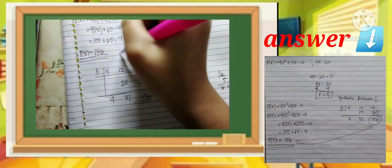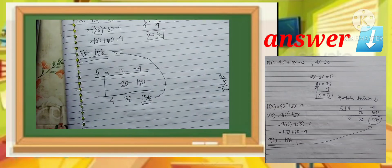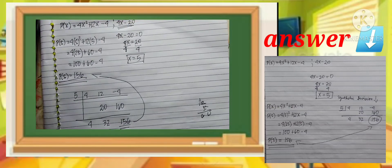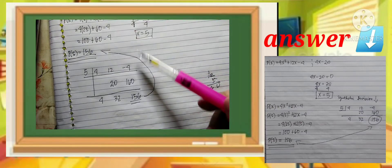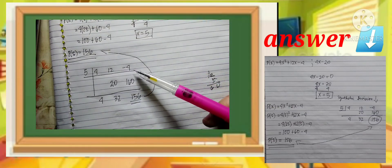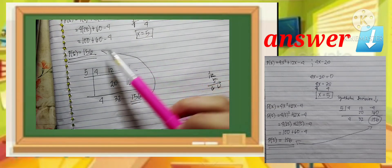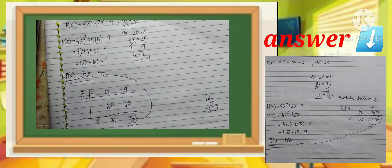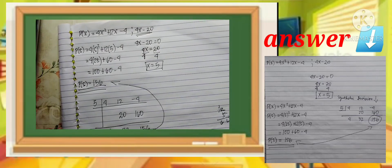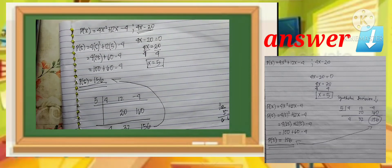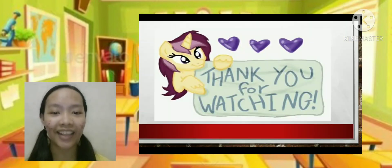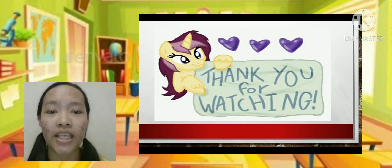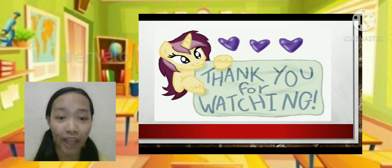There you go. The answer we got is correct. You can use synthetic division to make sure your answer is correct. That's an example of remainder theorem. I hope you learned something about geometric sequence and remainder theorem, and how to use the formulas. Thank you for watching.